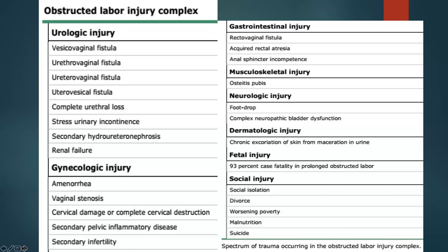Associated gynecological injuries can result in amenorrhea, vaginal stenosis, cervical damage, complete cervical disruption, secondary pelvic inflammatory disease. There can also be gastrointestinal injuries with rectal injury, musculoskeletal injuries, neurologic injuries, dermatological injuries, and social injuries — equally important — such as social isolation, divorce, worsening poverty, malnutrition, and suicide. When a patient's symptoms suggest obstetric injury, we should not only look for VVF; there is an entire spectrum including gynecological and gastrointestinal injuries.